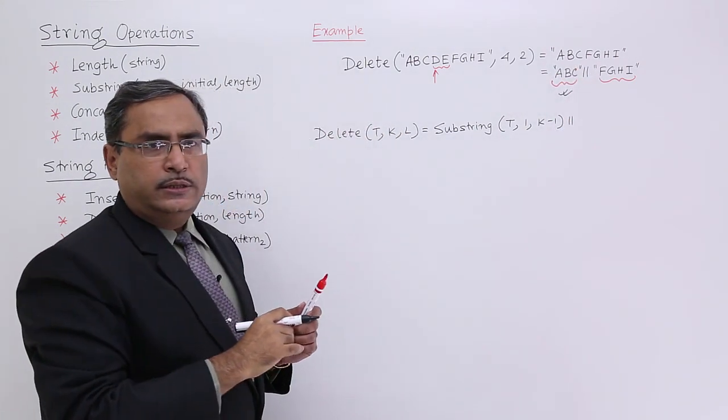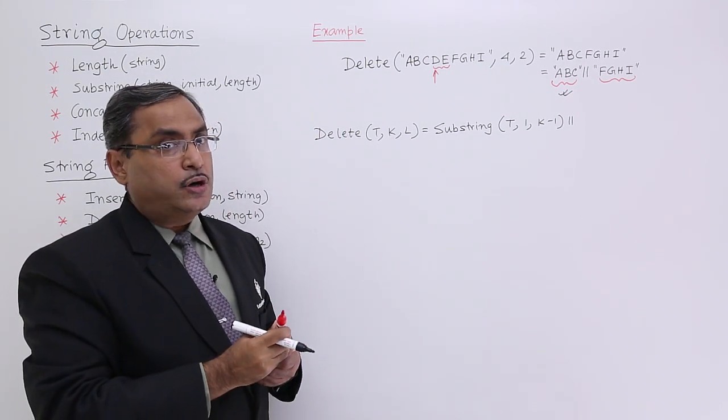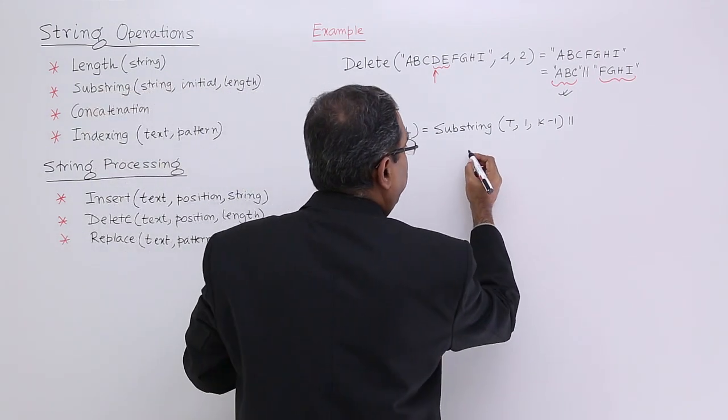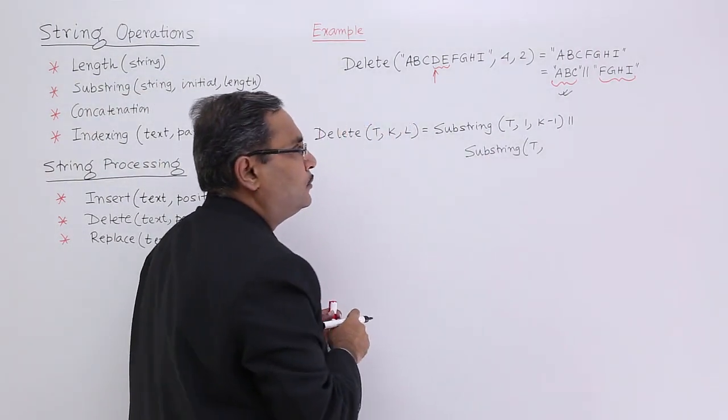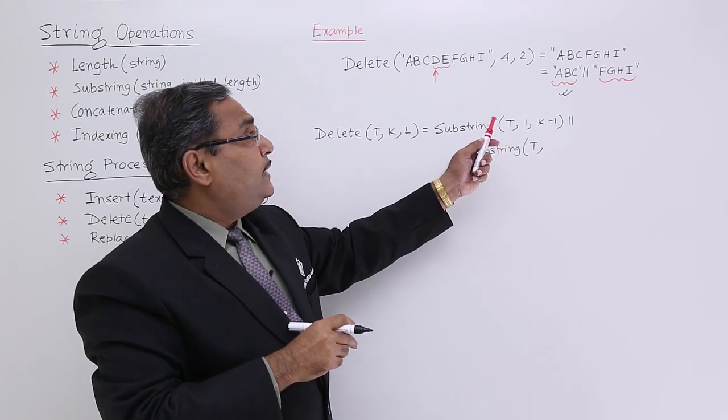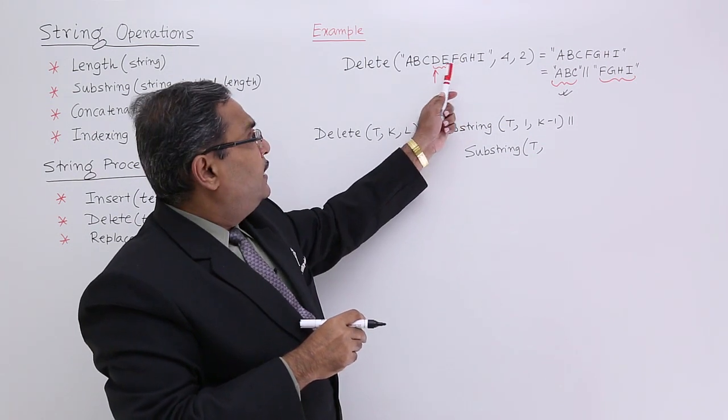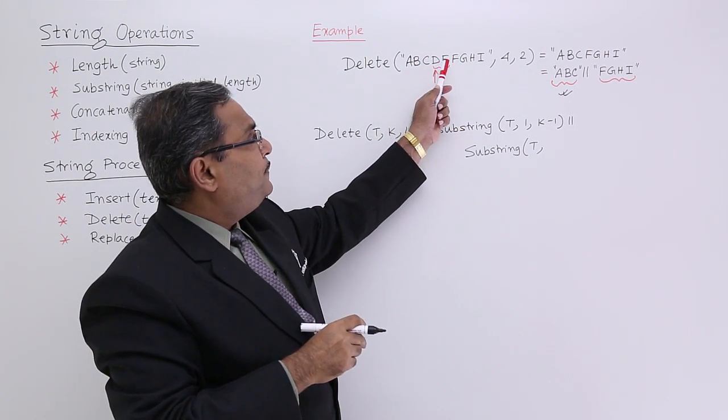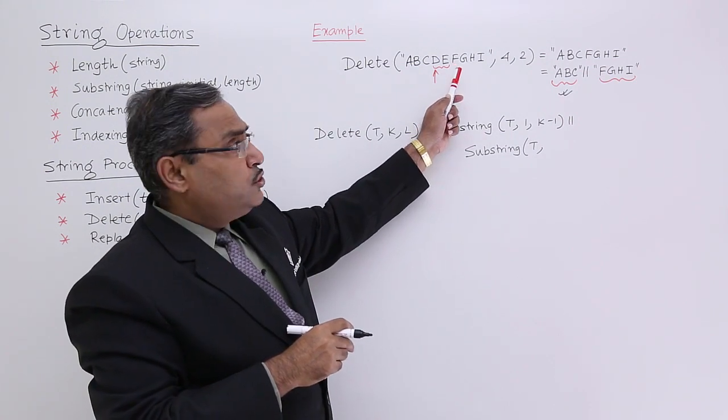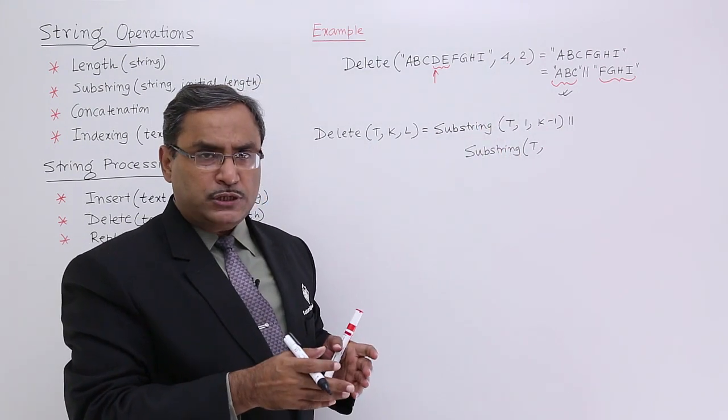Now I am remaining with this F, G, H, I number of characters to be concatenated at the end. I shall go for substring again. F, G, H, I - F means which position number? That is 1, 2, 3, 4, 5, 6. 6 is the position number for F. How to get 6 from 4 and 2? Very simple, 4 plus 2. It should be k plus l.